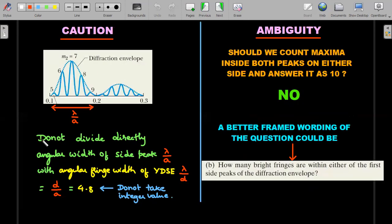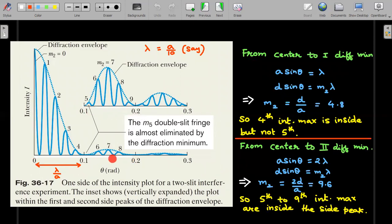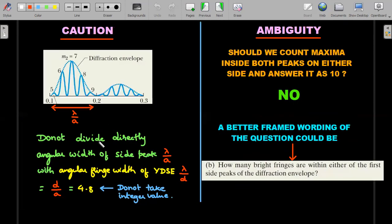So that is the caution on the left-hand side, as you could see. So from the value of this being λ by a and the next one is also λ by a, do not divide directly the angular width of the side peak. So the first order and the second order minima, the width itself is λ by a, right? So this width is also λ by a. Don't divide that one directly with the angular fringe width of λ by d. What is the angular fringe width of interference maximus? λ by d. Don't directly divide and say 4.8 and do not take the integral value. You may miss one particular interference maxima. So the answer is 5, and not 4.